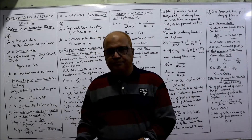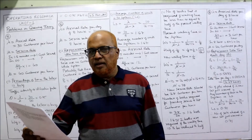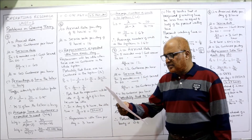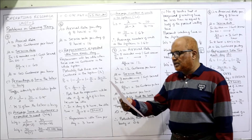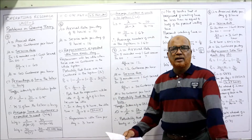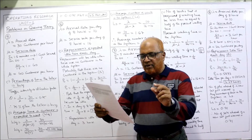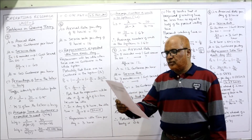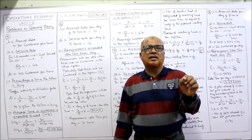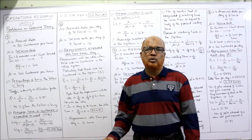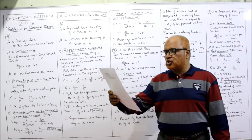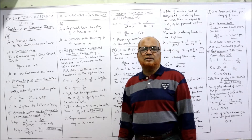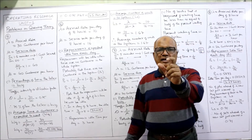Problem number five: In a bank, checks are cashed at a single teller counter — that means single channel. Customers arrive at the counter in a Poisson manner at an average rate of 30 customers per hour. This is the lambda, the arrival rate. The teller takes on average one and a half minutes to cash the check — that means 1.5 minutes is required to serve one customer. The service time has been shown to be exponentially distributed.